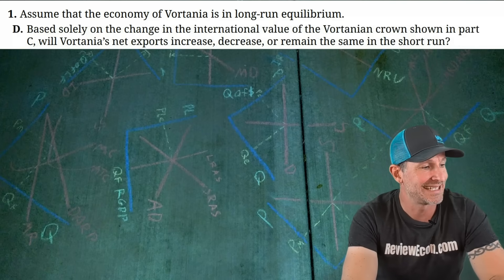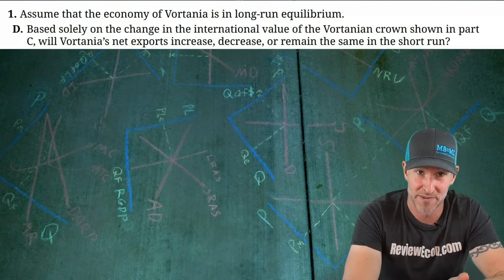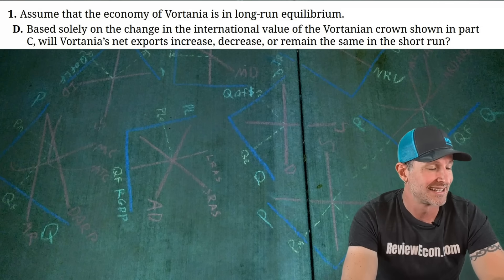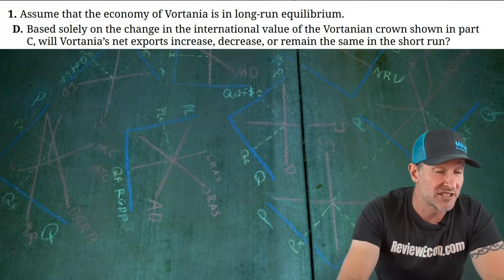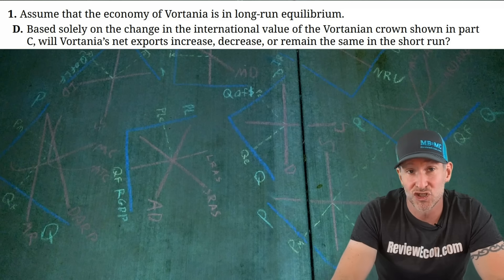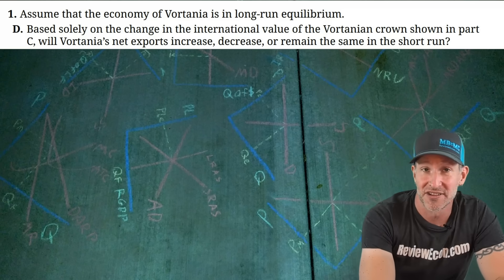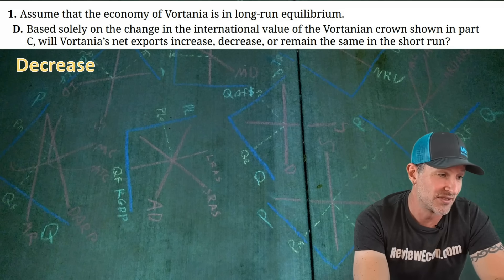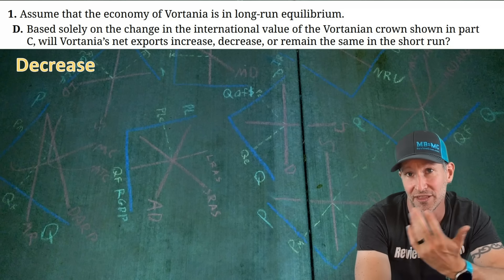For Part D, based solely on the international value of the Vortanian crown — which appreciated as shown in Part C — will Vortania's net exports increase, decrease, or remain the same in the short run? With an appreciation of the currency, foreign products become relatively cheaper for Vortanians and Vortania's exports become relatively more expensive for foreign consumers. That leads to the answer: decrease, because net exports decrease due to higher imports and lower exports driven solely by the exchange rate change.